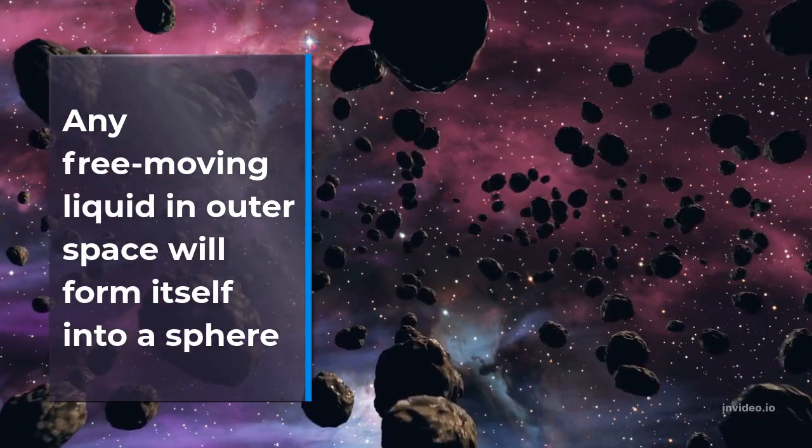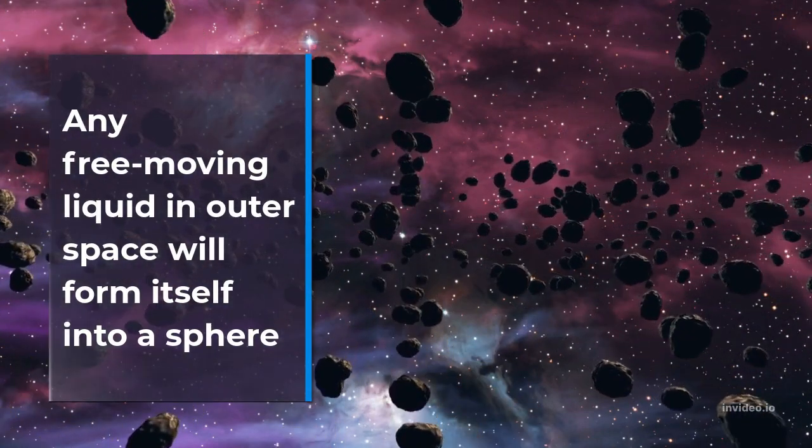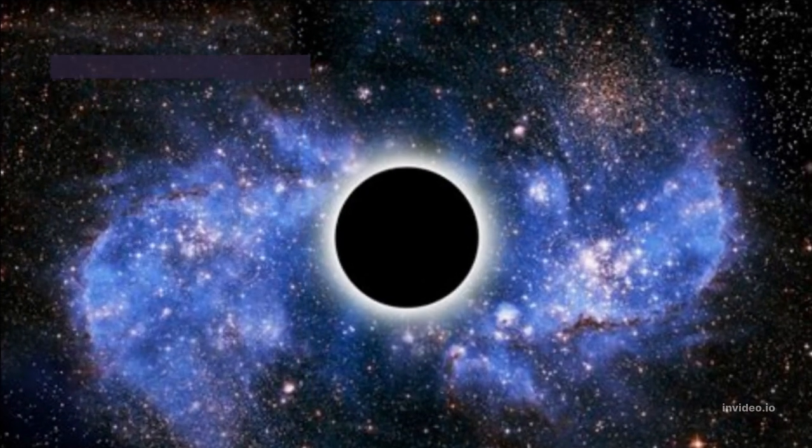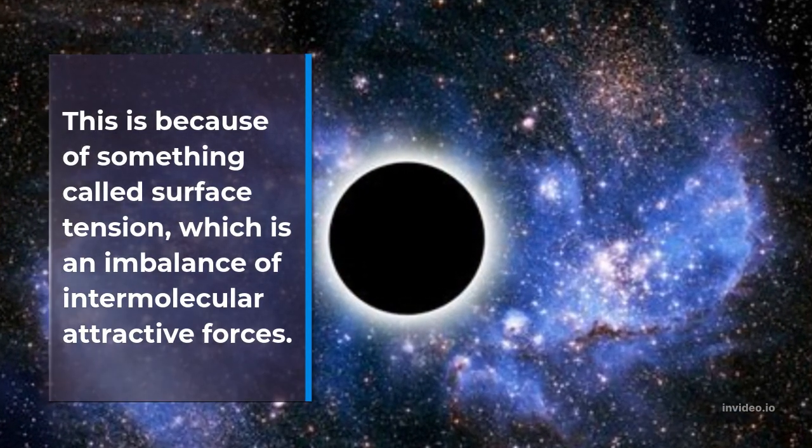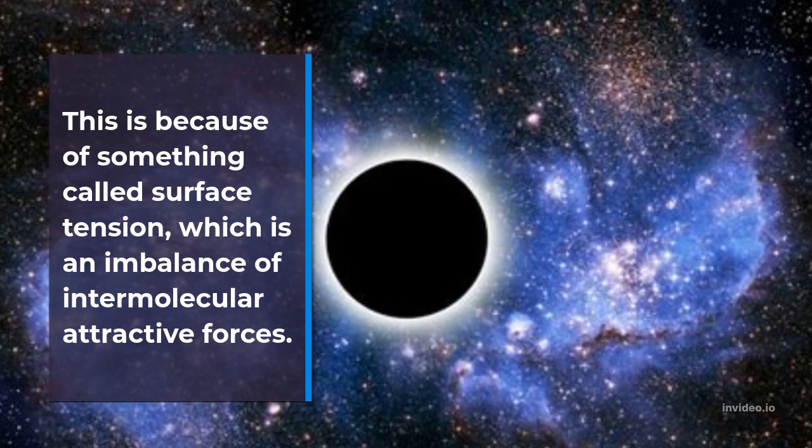Any free-moving liquid in outer space will form itself into a sphere. This is because of something called surface tension, which is an imbalance of intermolecular attractive forces.